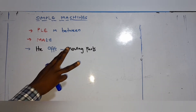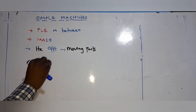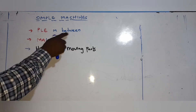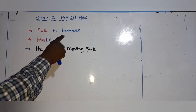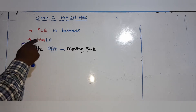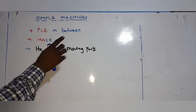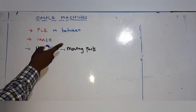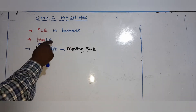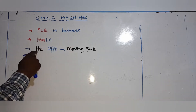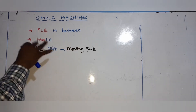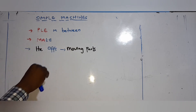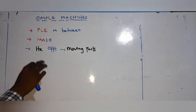There are three mnemonics we'll be looking at in this particular video. The first one is 'Play in Between.' The second mnemonic is 'MALE.' Then the last one is 'OFF'S Moving Path.' So these are the three mnemonics we'll be looking at in this particular video.